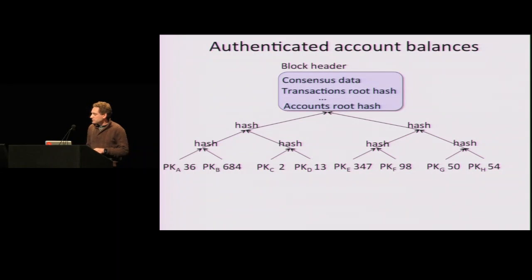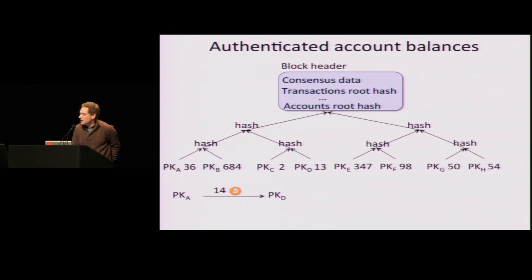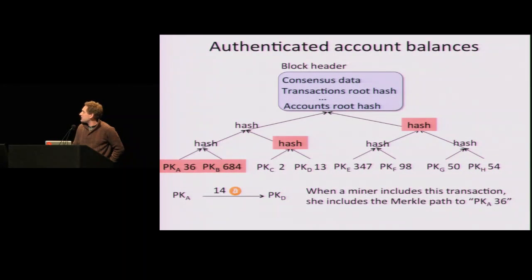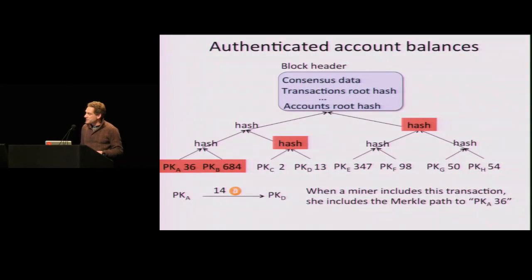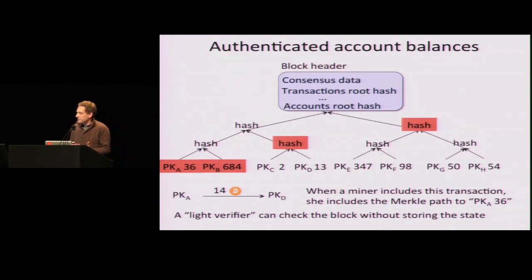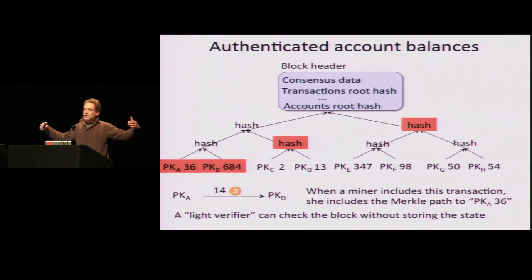If I want to prove that Alice is sending 14 bitcoins to David and really has that money, I send an authenticating path — the Merkle path, which are the hashes of siblings on the path from the leaf to the root of this Merkle tree. Then anybody validating the transaction will be able to see that it is indeed a leaf in this Merkle tree. A light verifier can check the entire block of transactions without storing this huge key-value store by just verifying these Merkle paths.